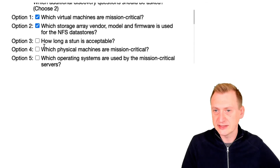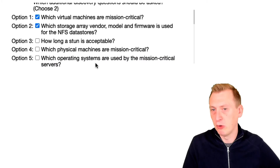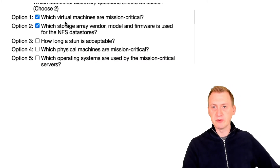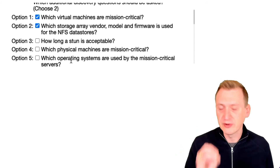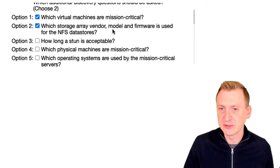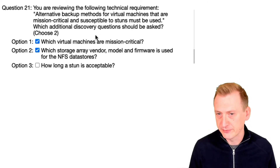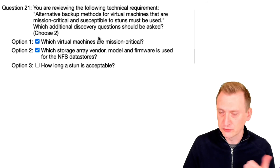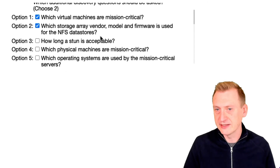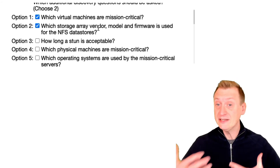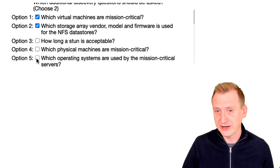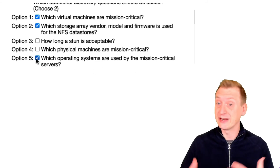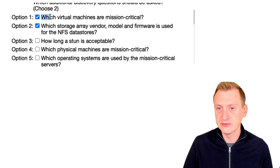Which operating systems are used? That also doesn't really matter as much — options one and two are more important for solving the task at hand. Basically, what this comes down to is we want to use backup from storage snapshots most likely, so we need to figure out which virtual machines are mission critical so we can target them, and secondly, whether it's even possible with the vendor. If it's not, then we might have to think about agents, and then we come back to option five — which operating system is it — so we can determine if we can use agents or not. But for this specific question, I would go with option one and option two.